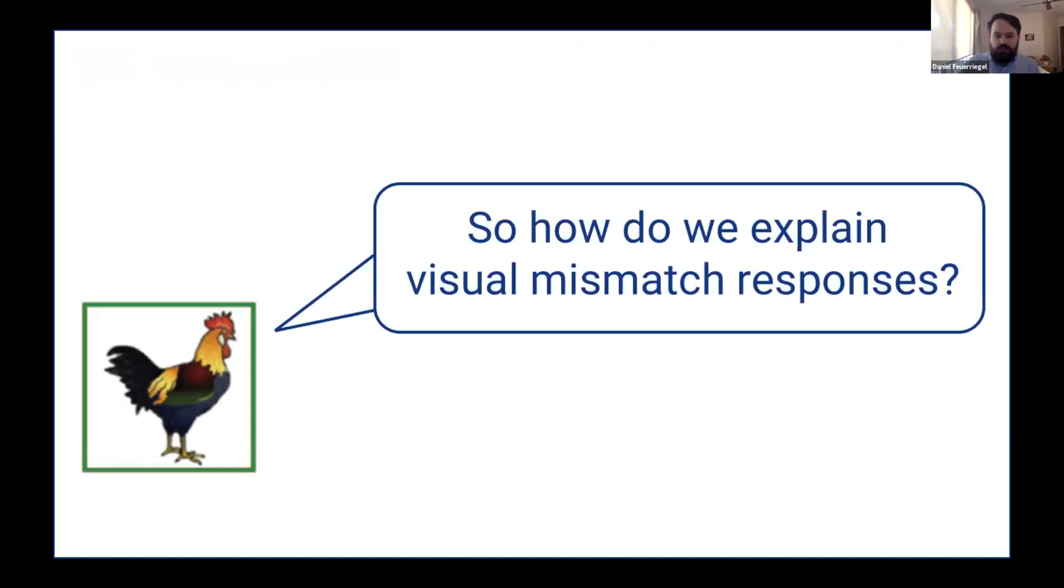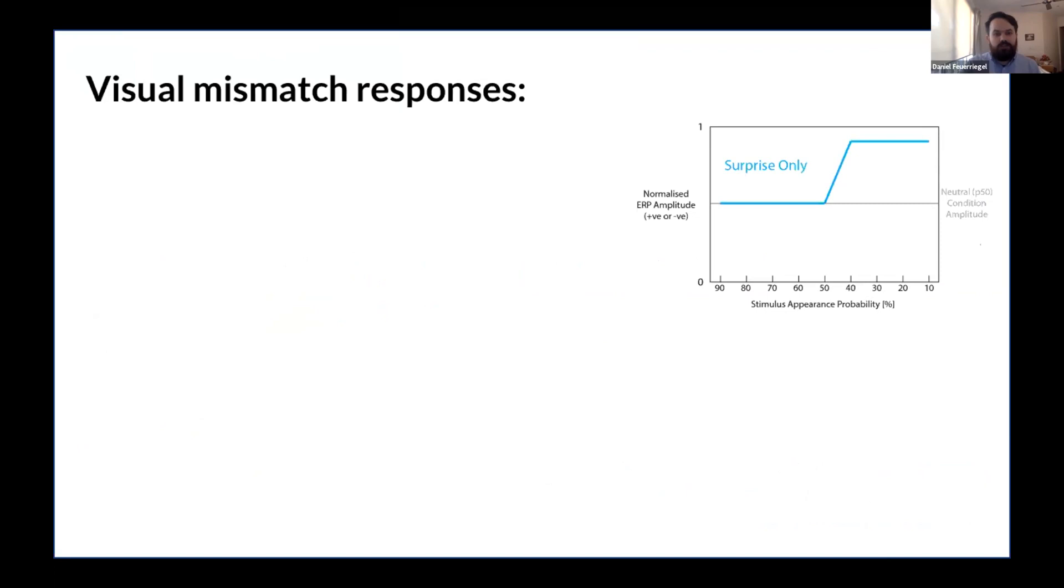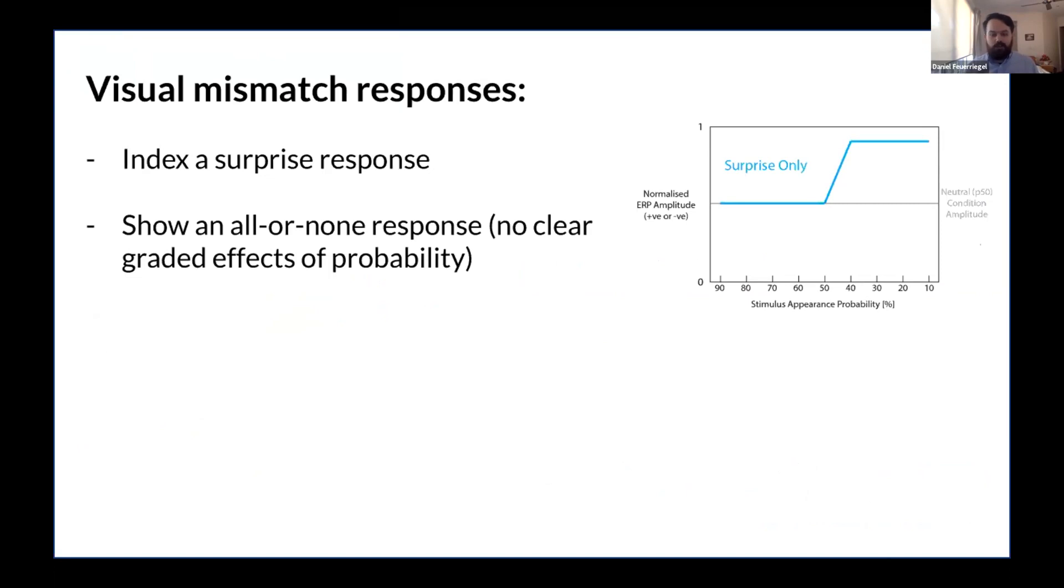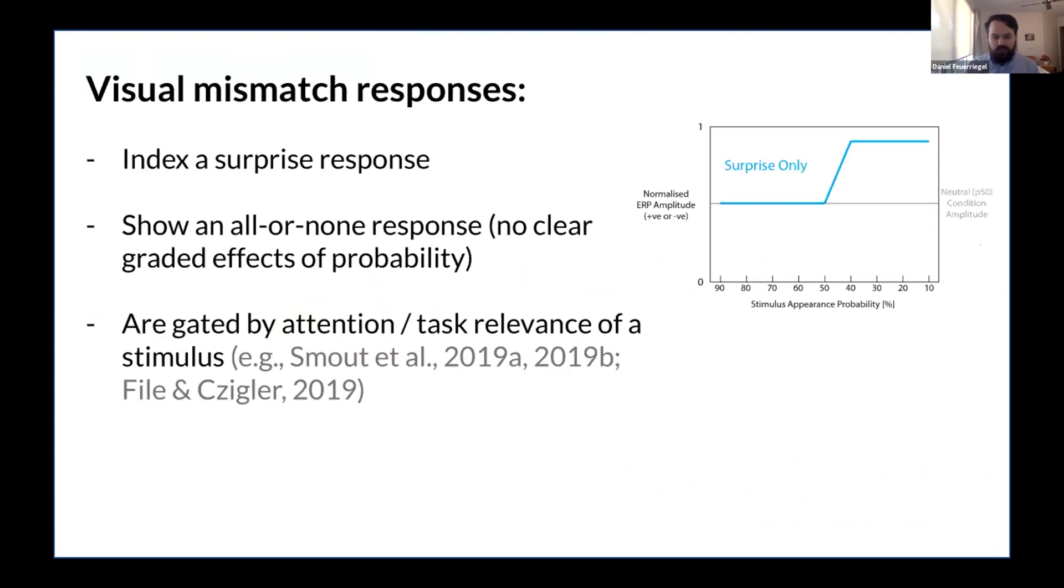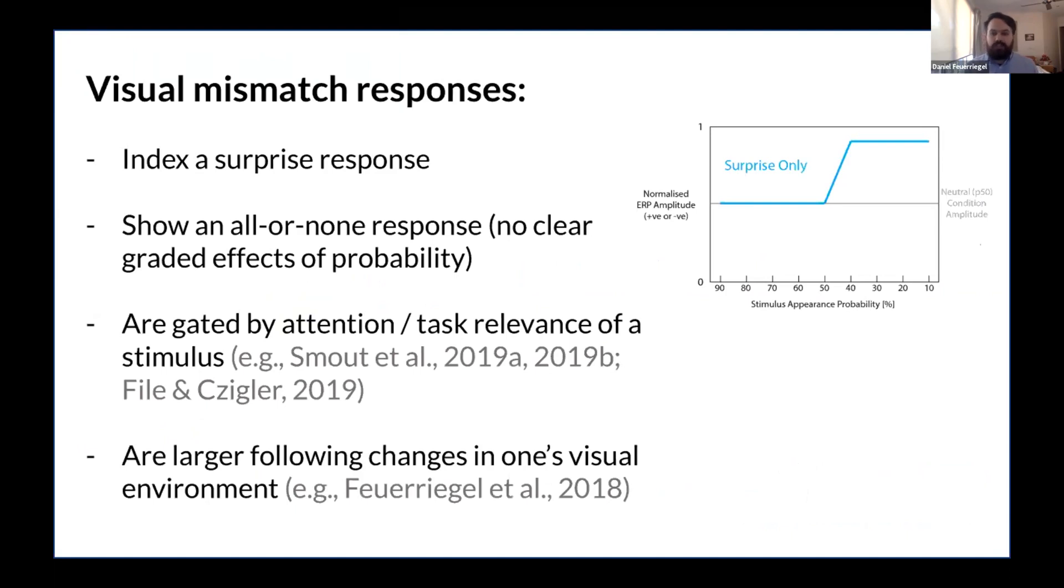So how do we understand visual mismatch responses to finish up? Visual mismatch responses seem to index a surprise response, which seemed to be shown all or none response. So no clear graded effects of stimulus probability. We didn't cover that, but this is what we found in our study. They seem to be gated by attention or the task relevance of the stimulus, at least in some studies here, as cited here. And they're also larger following changes in one's visual environment compared to sort of unexpected repetitions of the same stimulus. And so we think that this might reflect something, a precursor to the orienting response or something that might be necessary for things like post-surprise or post-error decision-making adjustments and things linked to reward learning and these sorts of things.